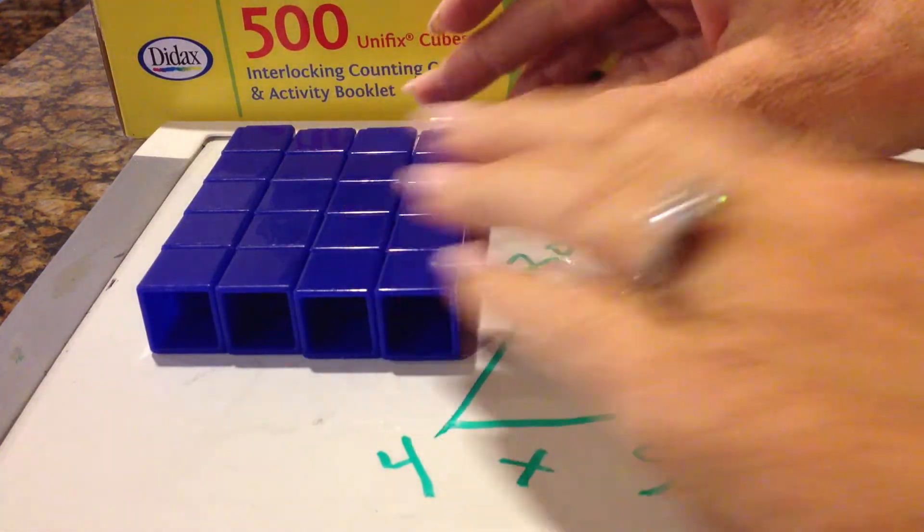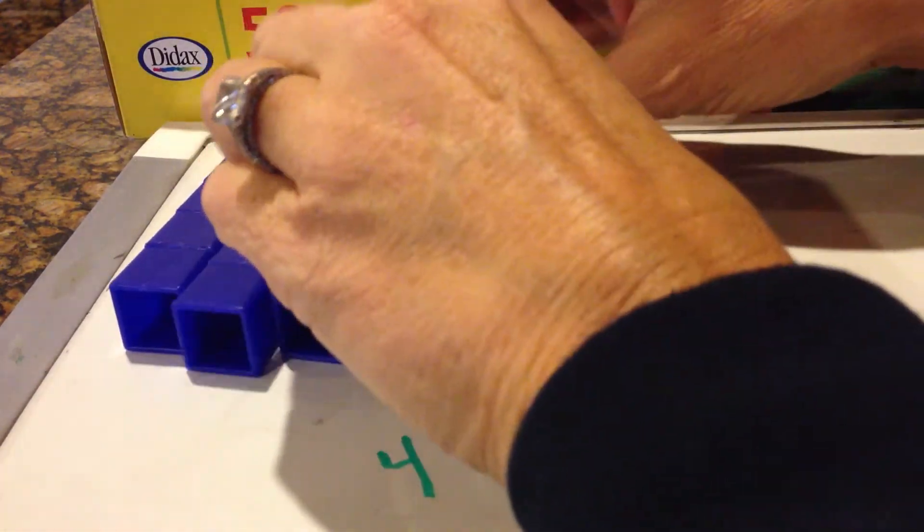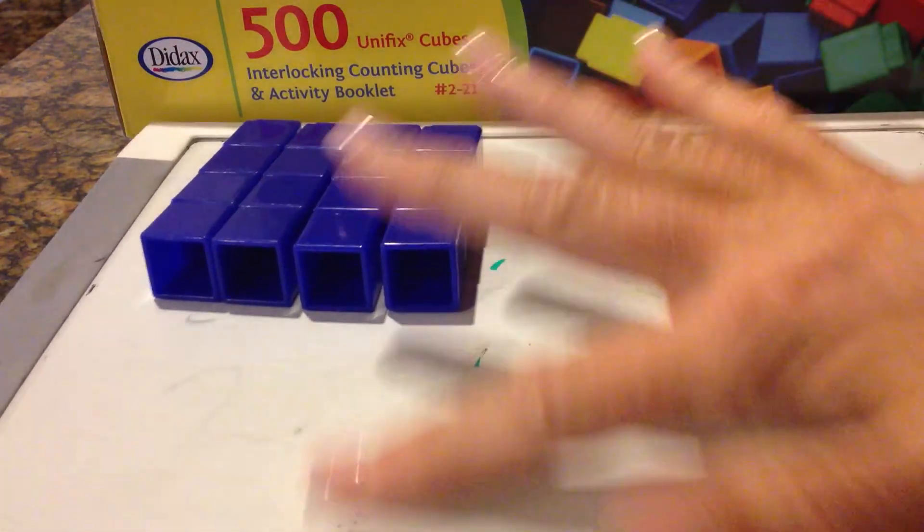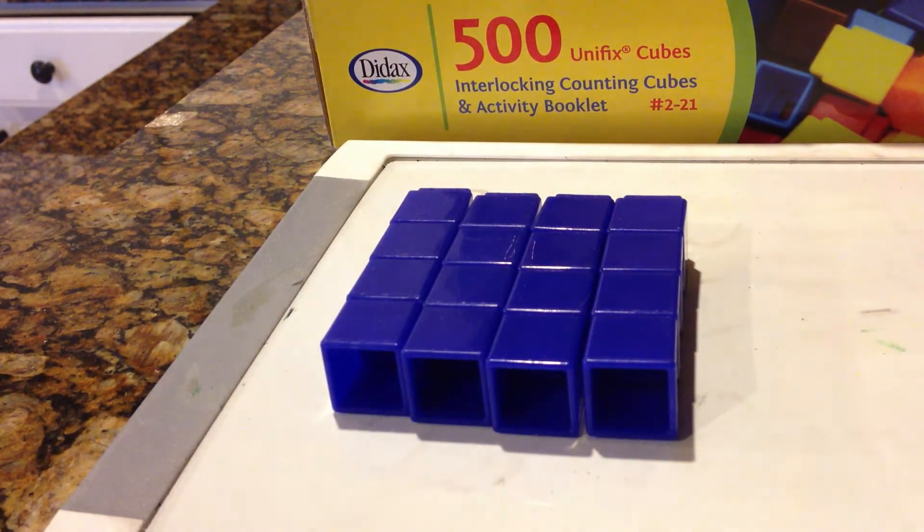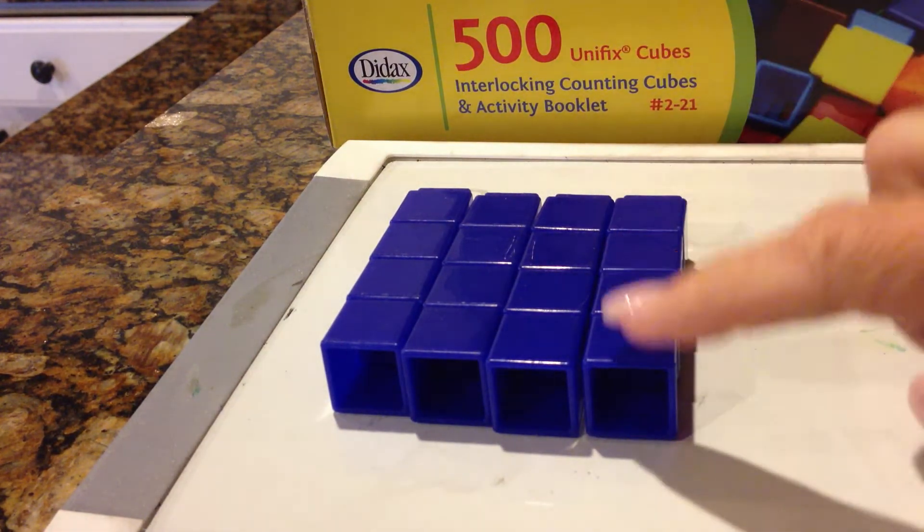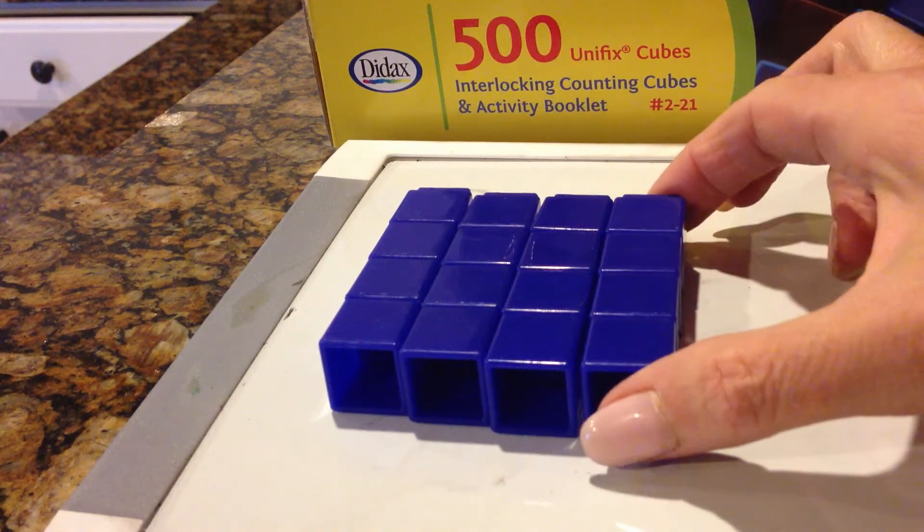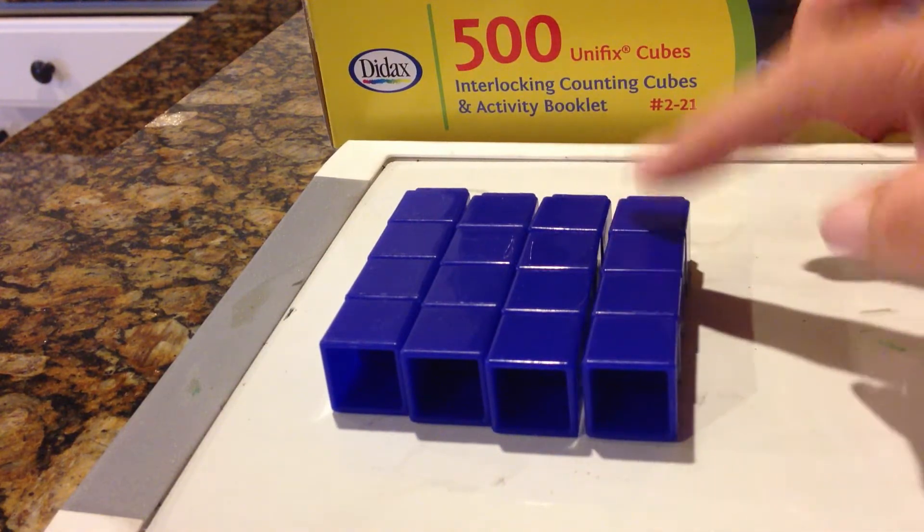But what if we turn it into 4 times 4? What if we turn this into 4 times 4? A lot of 7-year-olds, as an example, have not learned their square numbers. But here we have 1, 2, 3, 4 fours. 1, 2, 3, 4.